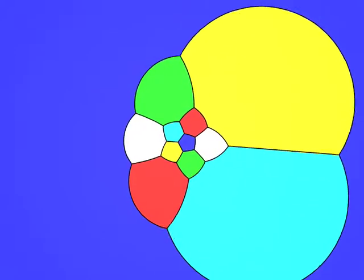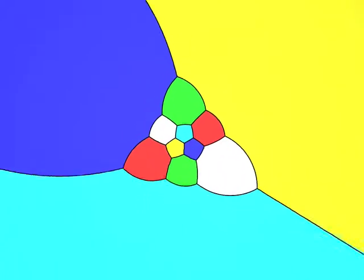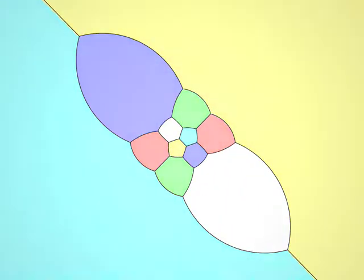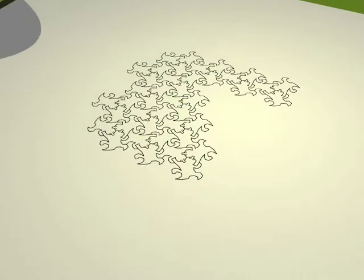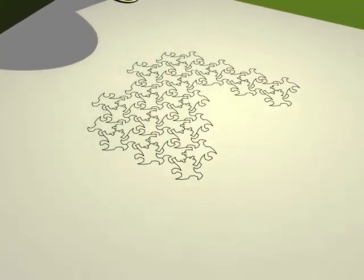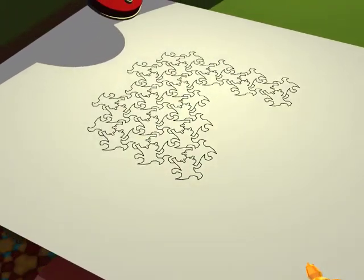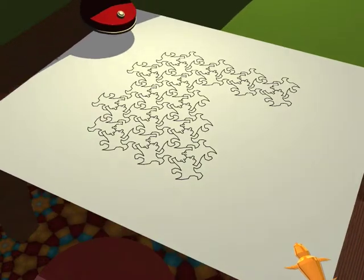These five solids have always fascinated geometers. The Greek philosophers attributed a magical importance to them by associating to each of them one of the fundamental elements from which the world is formed. We call these figures the platonic solids.